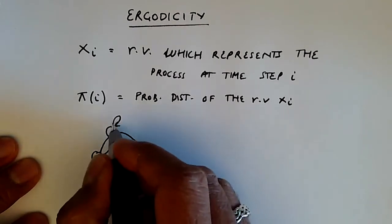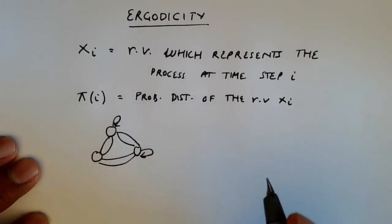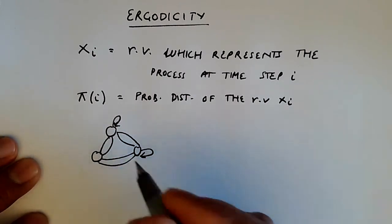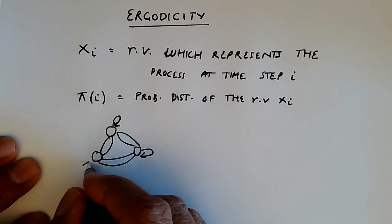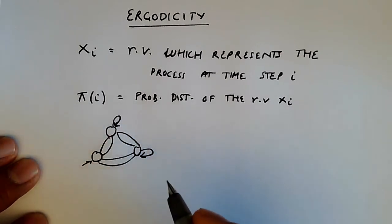And it had some distribution on the arrows, some values for the probability transitions. We'd like to know that if we had the stochastic process going far into the future from the initial state, so let's say that's the initial state and it transitioned, it went through over a very long period of time.